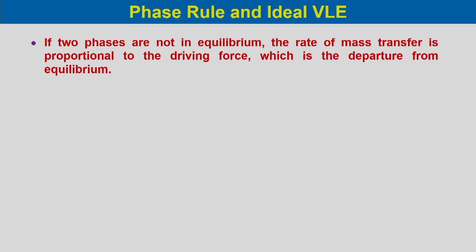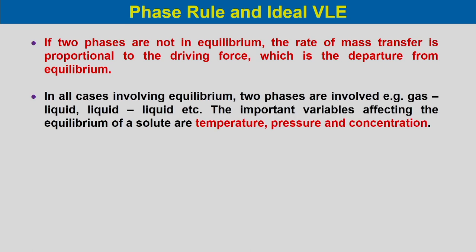We now discuss phase rule and ideal VLE. If two phases are not in equilibrium, the rate of mass transfer is proportional to the departure from equilibrium. The important variables affecting equilibrium of a solute are temperature, pressure, and concentration. The phase rule is: F = C − P + 2, where P is the number of phases, C is the number of components (with no chemical reactions), and F is the degrees of freedom.